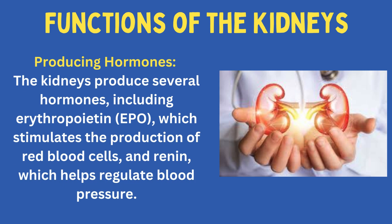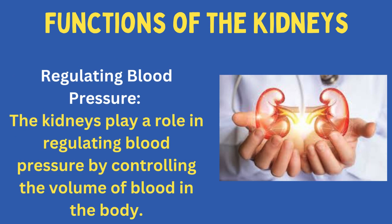Producing hormones: the kidneys produce several hormones, including erythropoietin (EPO), which stimulates the production of red blood cells, and renin, which helps regulate blood pressure. Regulating blood pressure: the kidneys play a role in regulating blood pressure by controlling the volume of blood in the body.